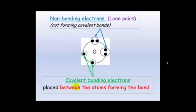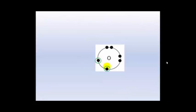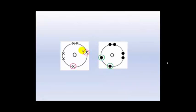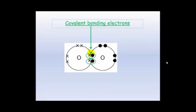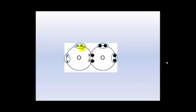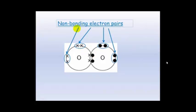These covalent bonding electrons are to be placed between the atoms forming the bond, because these are the ones that are going to be sharing with other atoms. These lone pair of non-bonding electrons can be put onto the outside. So we have our covalent ones that are going to bond, and we have another oxygen atom. They will share these electrons, and these will be the covalently bonded electrons. The ones that aren't being shared are the non-bonding electron pairs, or the lone pairs.